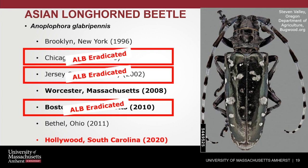Asian Longhorned Beetle is managed differently than many invasive insects because there is an opportunity to eradicate it through costly and extensive management methods — and it can be done, as evidenced here. The infestations in Chicago, New Jersey, and Boston, Massachusetts have been declared eradicated. There are still active Asian Longhorned Beetle eradication programs in New York, Massachusetts, Ohio, and unfortunately possibly soon in South Carolina. Fingers crossed that maybe it is only a couple of trees they can cut, chip, and get rid of that infestation.